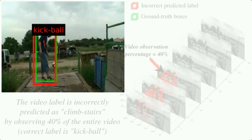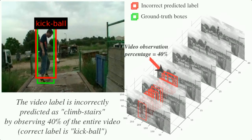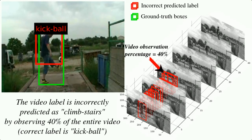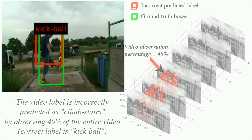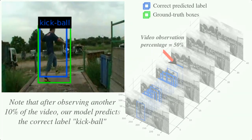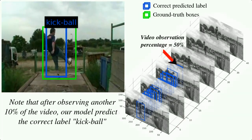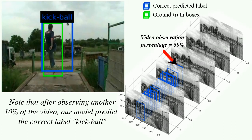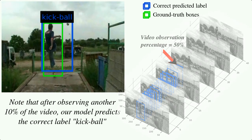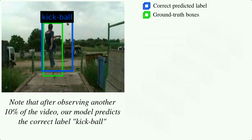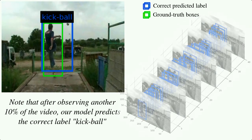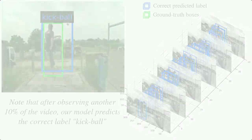We now show qualitative results on the JHMDB21 dataset. In this kickball action sequence, initially our model predicts an incorrect label by observing 40% of the video. Note that after observing another 10% of the video, our model predicts the correct label as kickball.